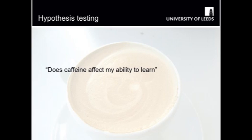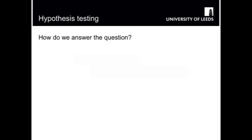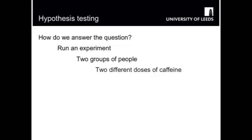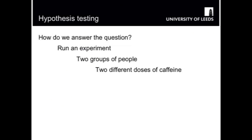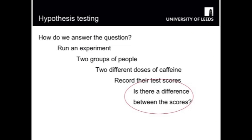For example, we might ask a question such as: does caffeine help me learn? In order to address this question, we would first get two groups of people — one group we would give caffeine and another group we would give a placebo. We'd then run some sort of experiment, some sort of test to measure the abilities of those people, and finally we would look at the data gathered and run some analysis to determine if the caffeine has affected people's ability, or if the measures we've obtained are by chance — that is, is there actually a difference between those two groups' test scores?